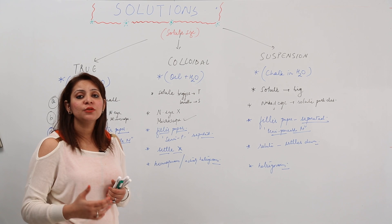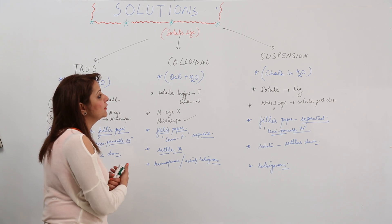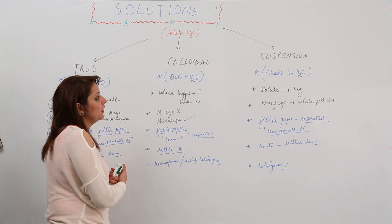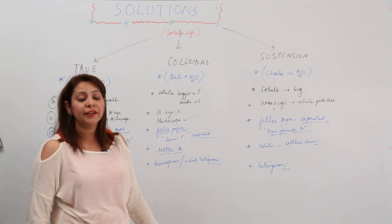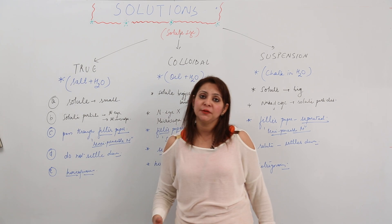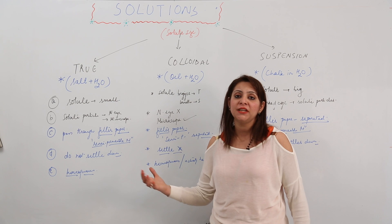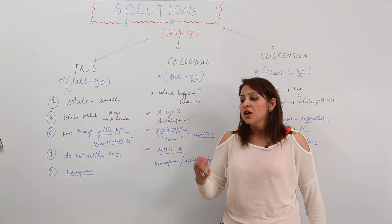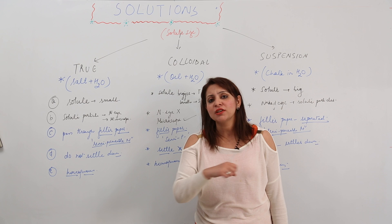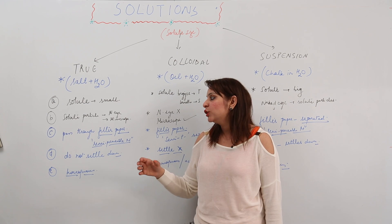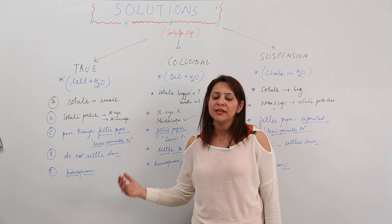All these properties arise simply due to the difference in the size of the solute particles. The main logic behind classifying solutions into three categories is just the solute size — because they differ in solute size, they show different properties: sometimes passing through filter paper, sometimes appearing in different phases, sometimes existing in one phase. This is how we classify solutions according to solute size.